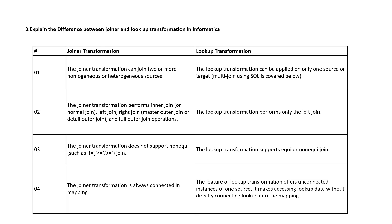Explain the difference between Joiner and Lookup transformation. The Joiner transformation can join two or more homogeneous and heterogeneous sources, whereas the Lookup transformation can be applied to only one source or multiple targets. The Joiner transformation performs inner join, left join, right join, and full outer join, or master/detail outer join, whereas the Lookup transformation performs only a left join. The Joiner transformation does not support non-equi joins, whereas the Lookup transformation supports both equi and non-equi joins.